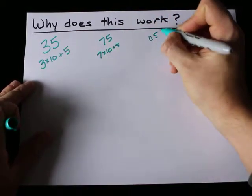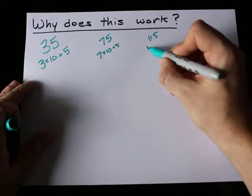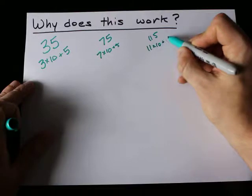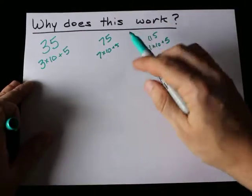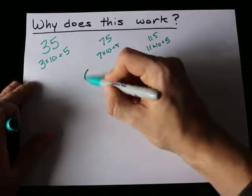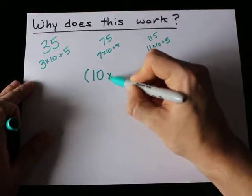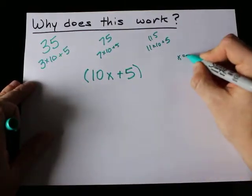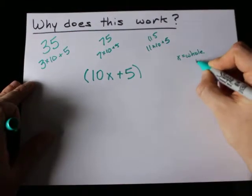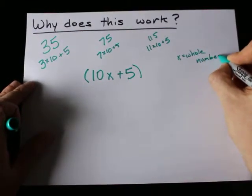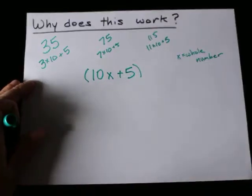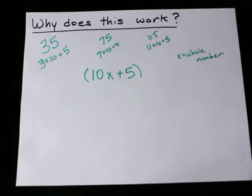And it works for multiple digit numbers, like 115. That's 11 times 10, 110, plus 5. So, any number that ends in 5 can be written as 10x plus 5, where x is a whole number. If x was a decimal, then we would end up with some left behind that would interfere with the ones digit, and it wouldn't end in 5 anymore.